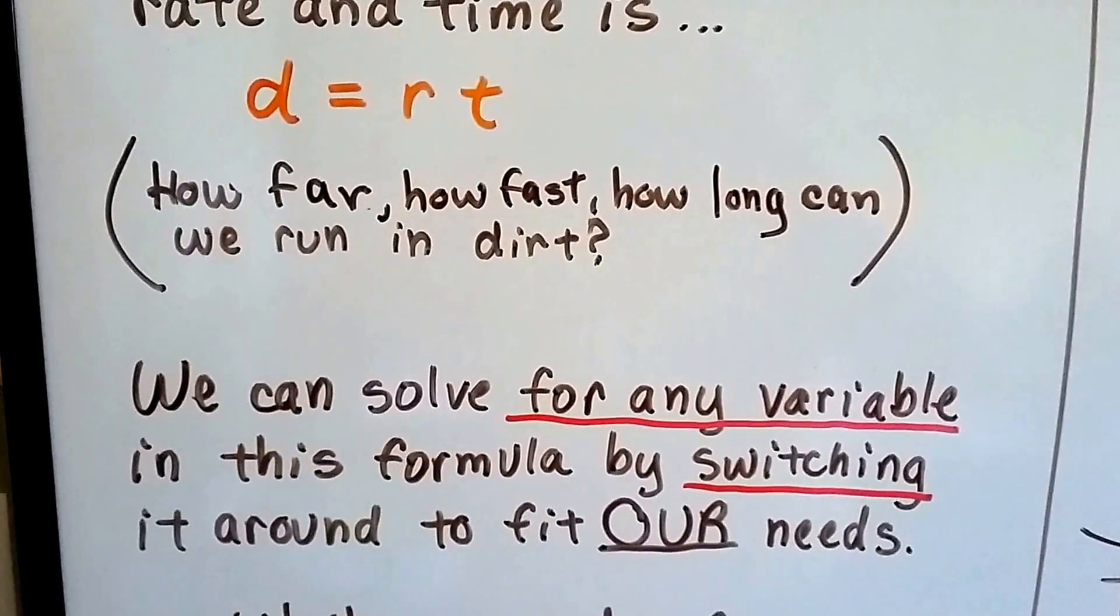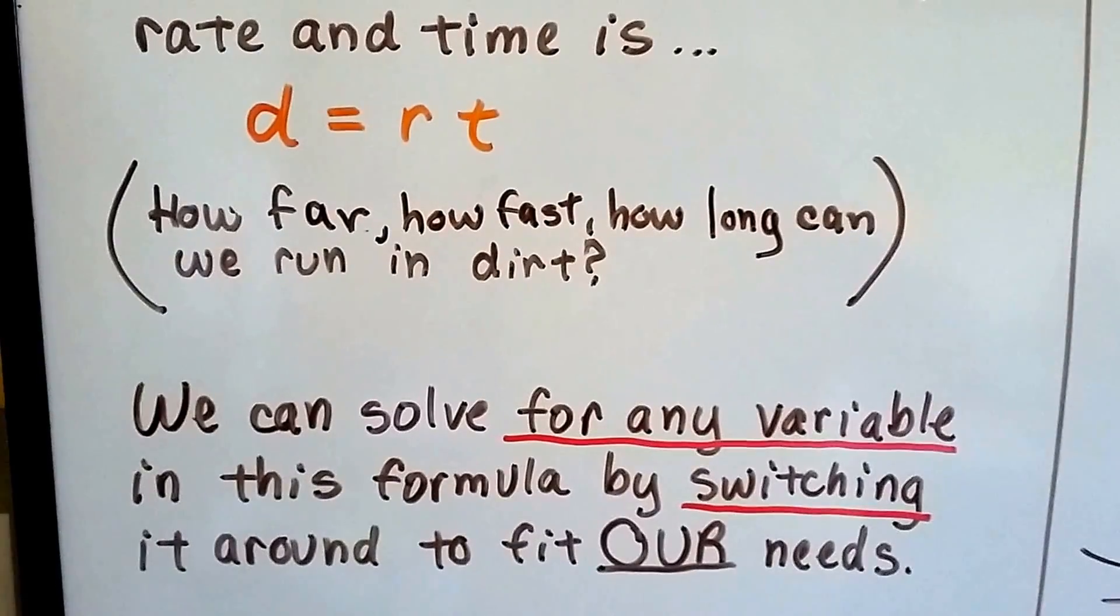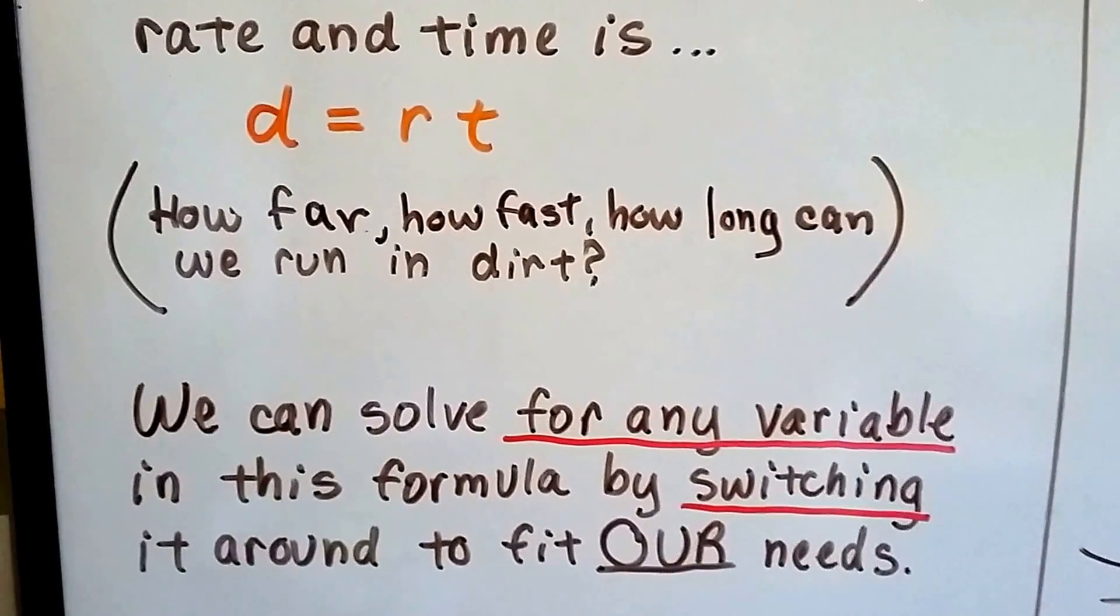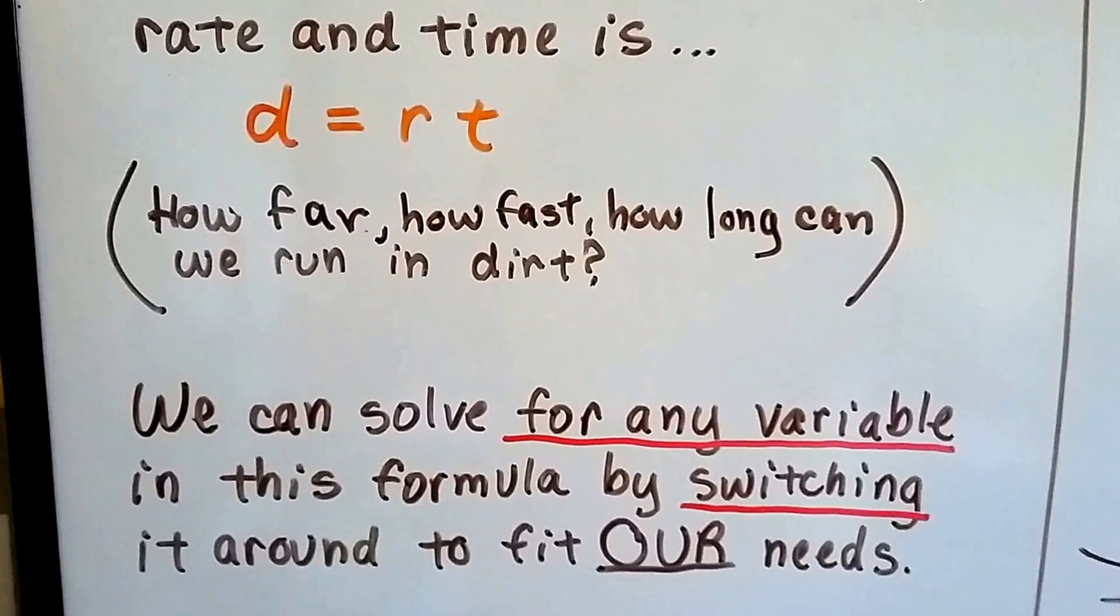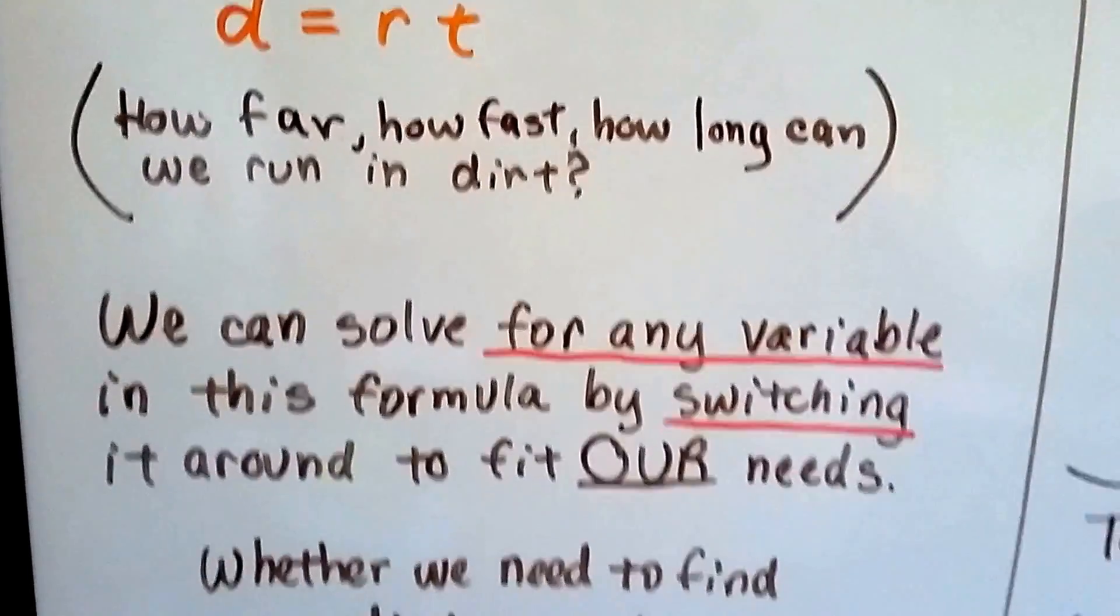We can solve for any variable in this formula by switching it around to fit our needs. If we want to find the distance, we keep it as it is. But what if we want to find the rate or the time? Then that would be r equals or t equals. We can switch it around.